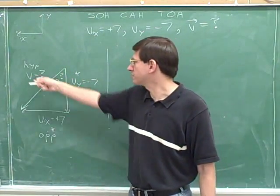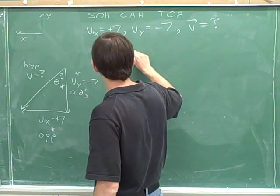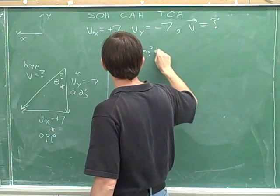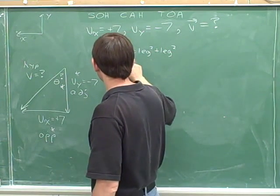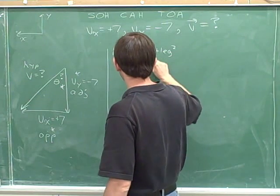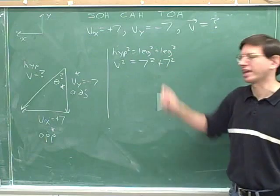Since we know two sides, we can find the third side using the Pythagorean theorem. The symbol for the hypotenuse is v. One leg has a length of 7 and the other leg has a length of 7. These are all lengths so we're not plugging in signs.